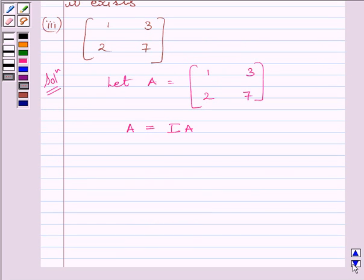Or, we can write matrix [1, 3; 2, 7] is equal to matrix [1, 0; 0, 1] multiplied by A.